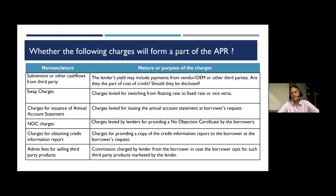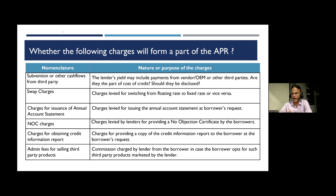On value-added services being sold to the customer: any third-party services other than the credit facility — even if called value-added — if they are not related to the grant of the credit facility and were not necessary ingredients of the credit facility, they will not be part of the APR. On whether a sanction letter is still compulsory if KFS is provided: a sanction letter would still be advisable because KFS is a standard format, and you might like to include other conditionalities or clauses that are not part of KFS.